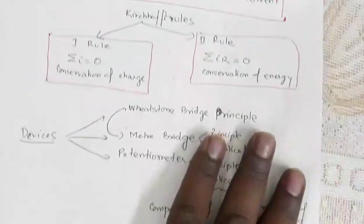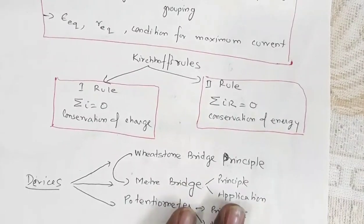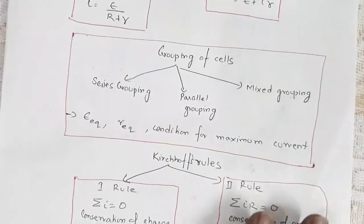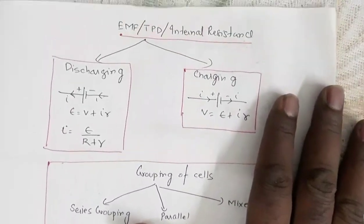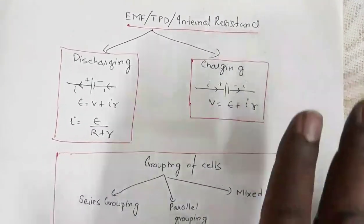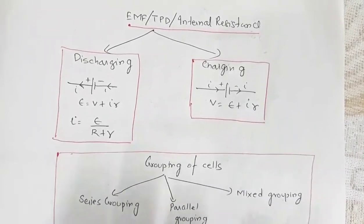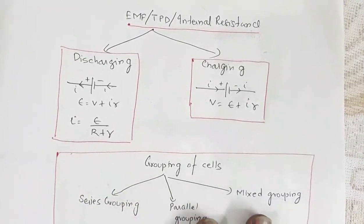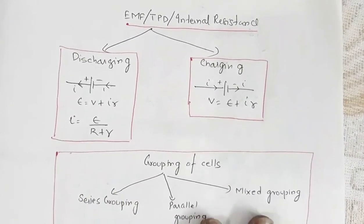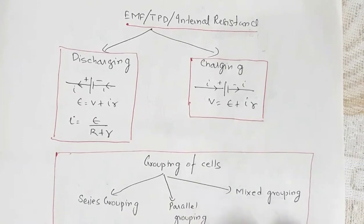These are the topics in current electricity. You should be able to revise this chapter in a maximum of half an hour. This is especially for students of the Assam Higher Secondary Education Board.